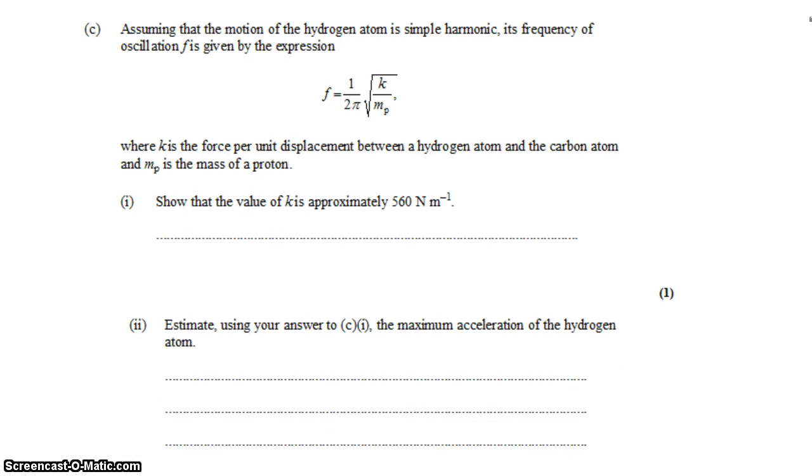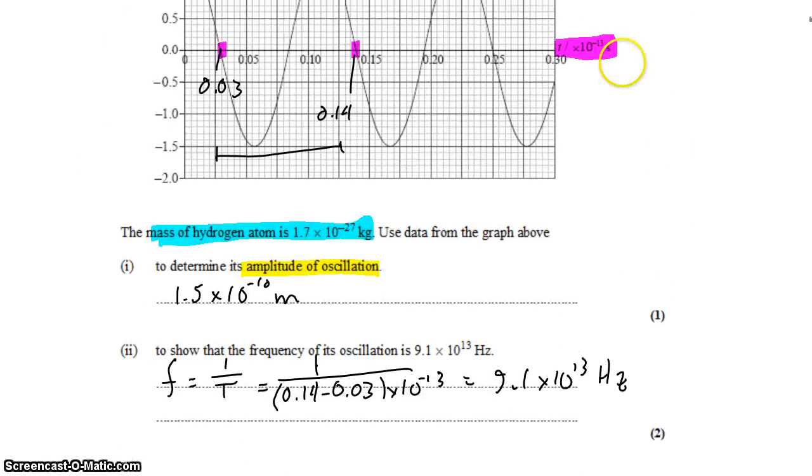Moving on to part c, we're going to assume that the motion of the hydrogen atom is simple harmonic and its frequency of oscillation can be given by this expression. k is the force per unit displacement, so it's a spring constant between the hydrogen atom and the carbon atom, and mp is the mass of a proton. Or we could consider it to be the mass of the hydrogen atom, which we're given 1.7.